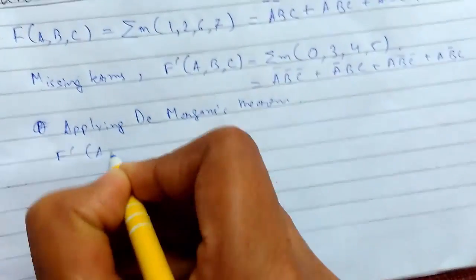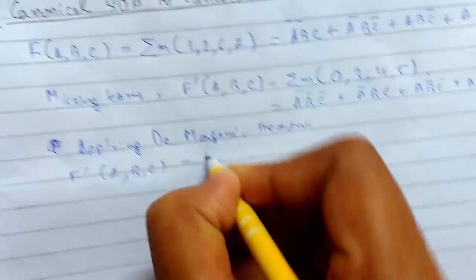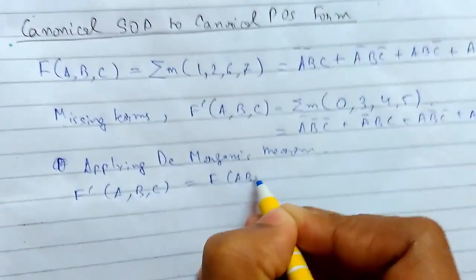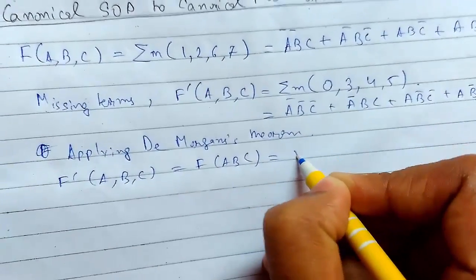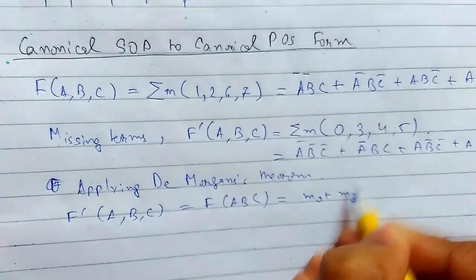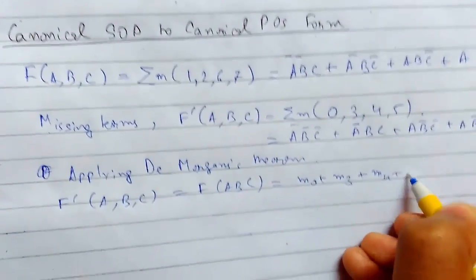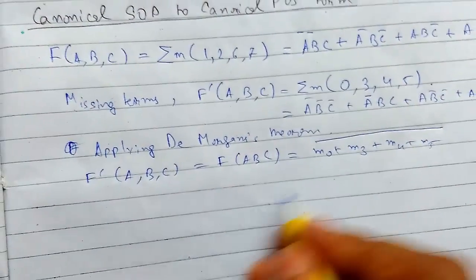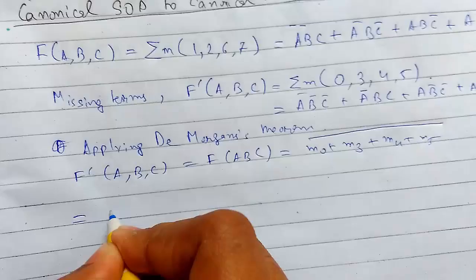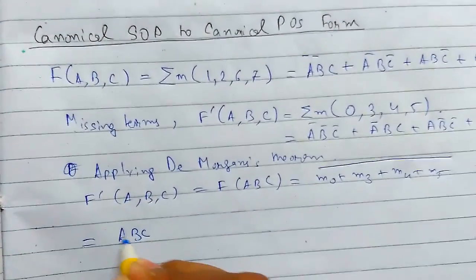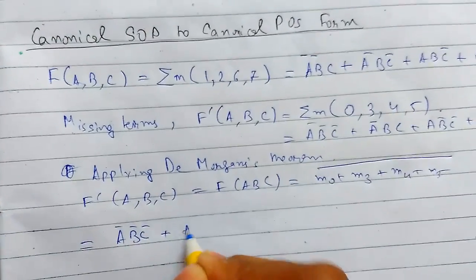F̅ equals to... this will be F̅(A,B,C), which includes m0, m3, m4, m5, and I will just complement it. Let me show you how it works. I will just copy all of these.